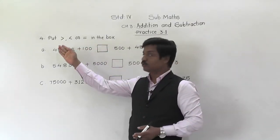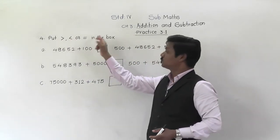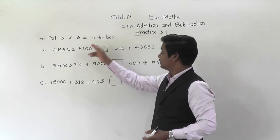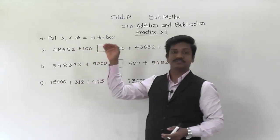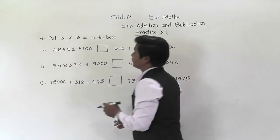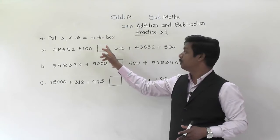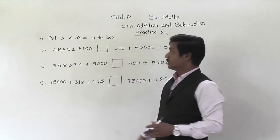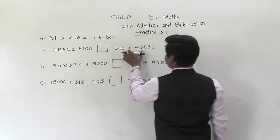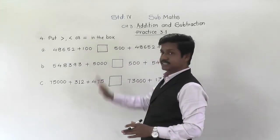Let us see question number 4: put greater than, less than, or equal to — these 3 signs — in the box. Here 3 examples are given where we have to compare the two sides, left side and right side, and put the appropriate sign.